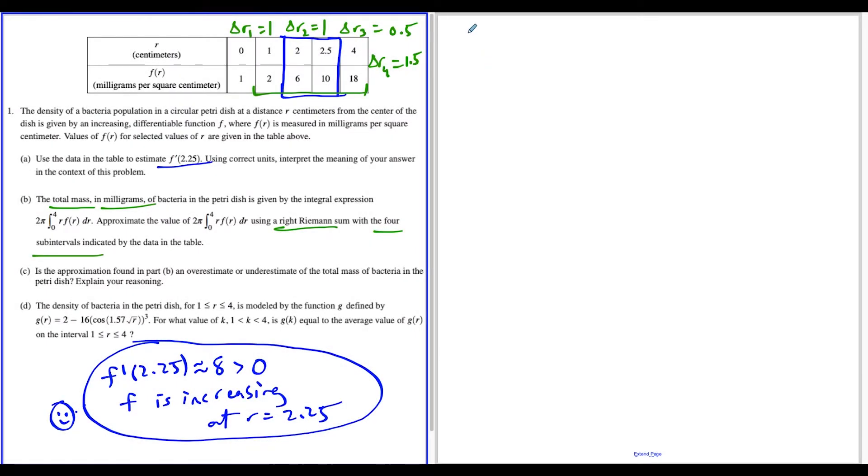For part C, we're trying to see if our approximation from part B is an over or underestimate of the total mass. You need to think about what it looks like when you have an increasing function. You could draw this out or think of it in your head.